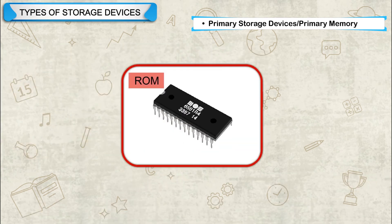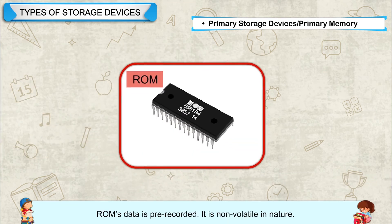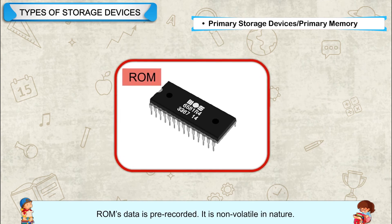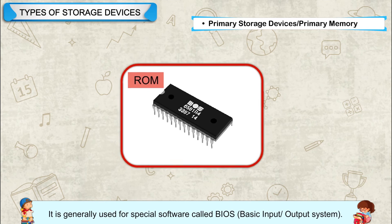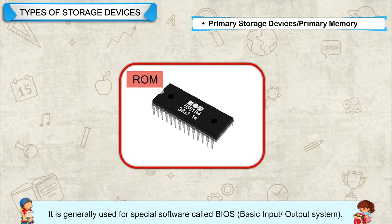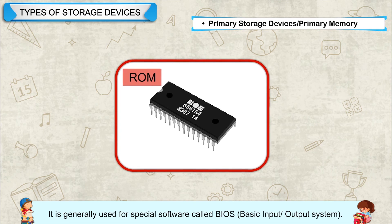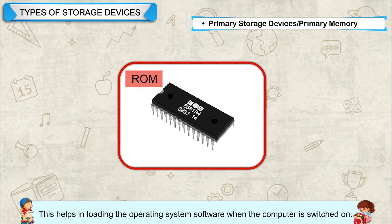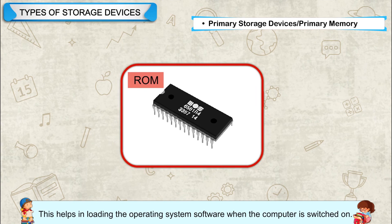Read Only Memory (ROM) — ROM's data is pre-recorded. It is non-volatile in nature. It is generally used for special software called BIOS (Basic Input Output System), which helps in loading the operating system software when the computer is switched on.